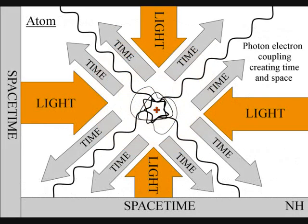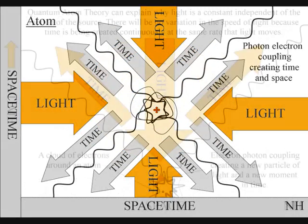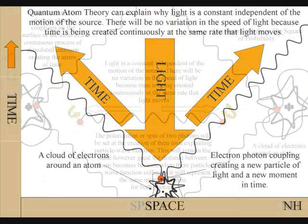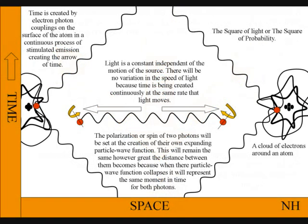In this theory, light is a universal constant, independent of the motion of the source, because time is being created continuously at the same rate that light moves.